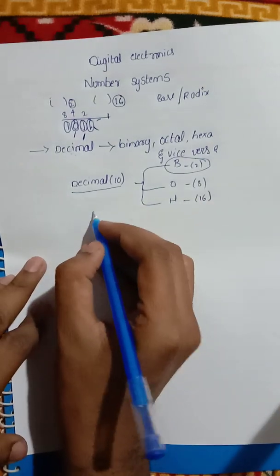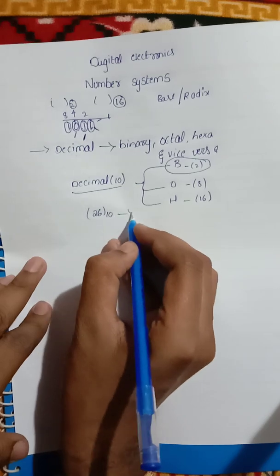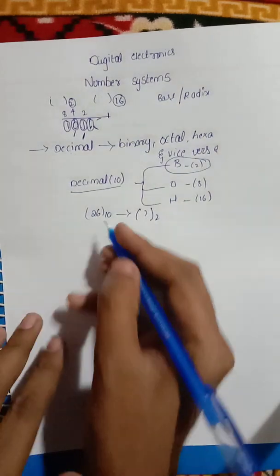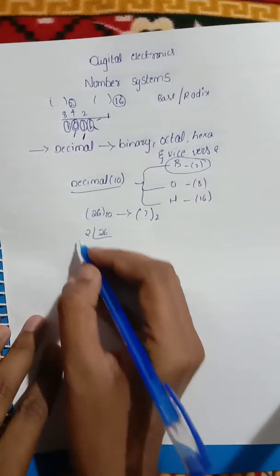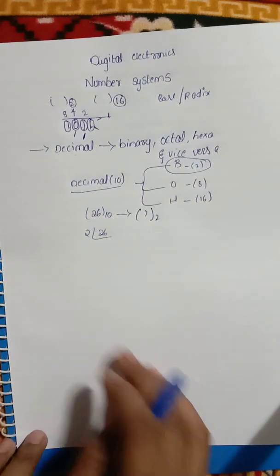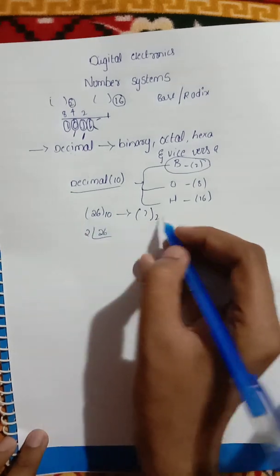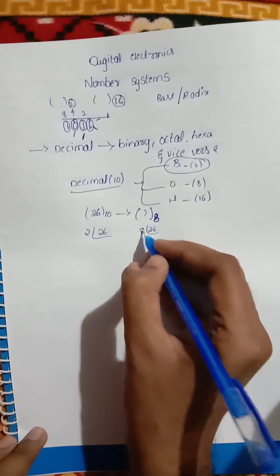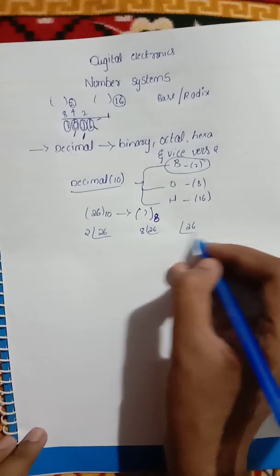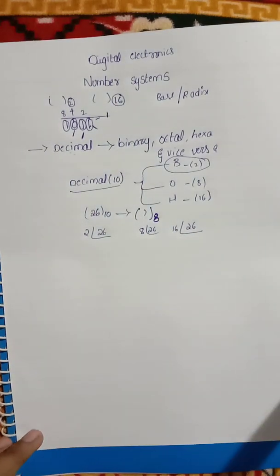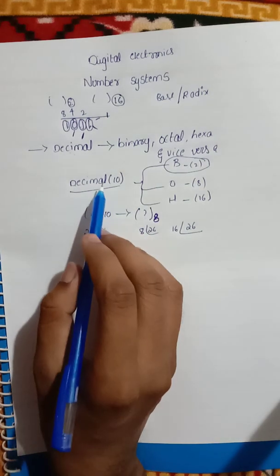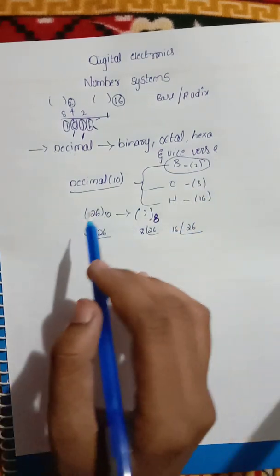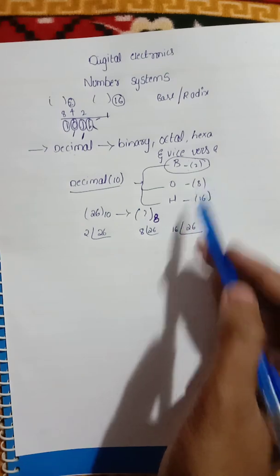Suppose you have the number 26, which is base 10, and you want to convert to base 2 — decimal to binary. You need to divide 26 by 2. The remainder from each division is recorded. Similarly, for octal or hexadecimal, simply divide the decimal number by its base — 8 or 16 respectively.